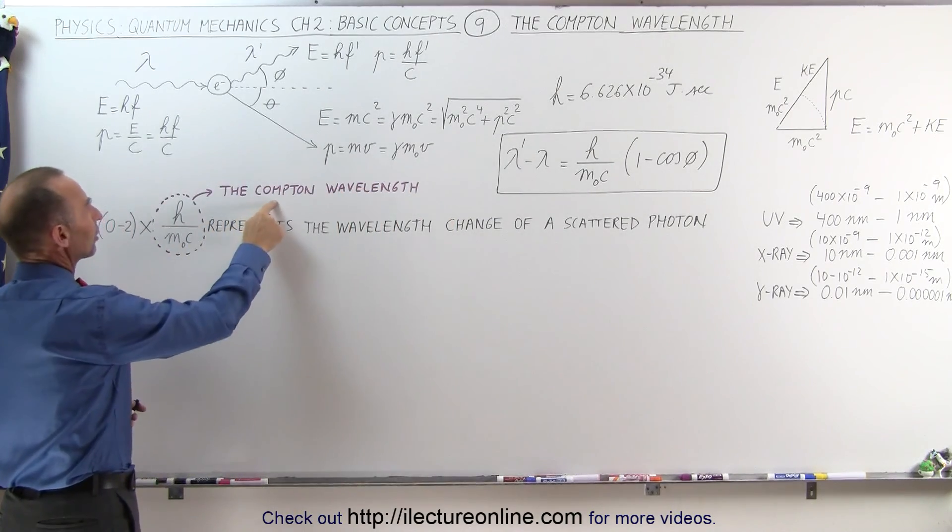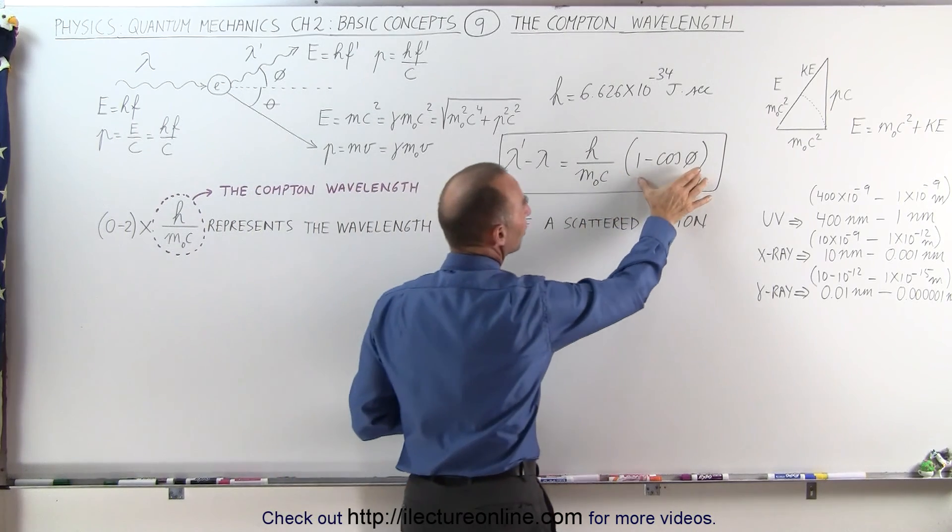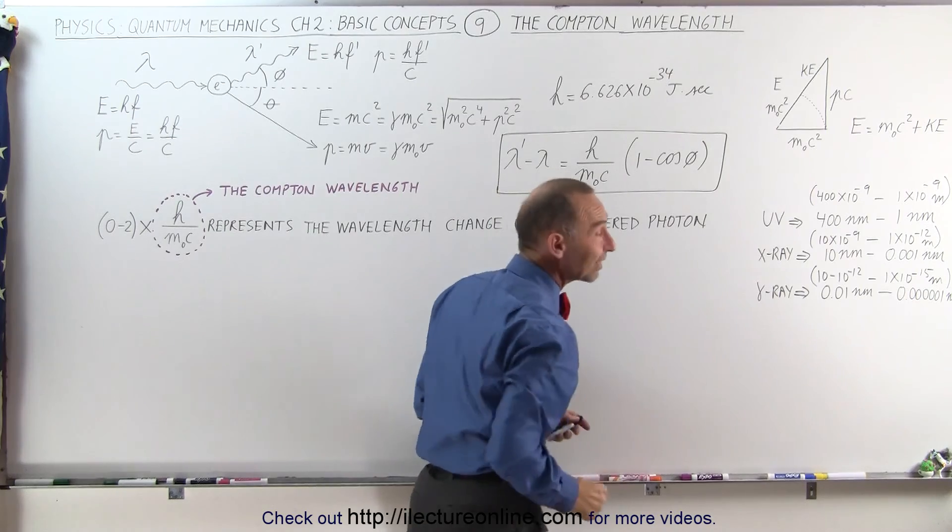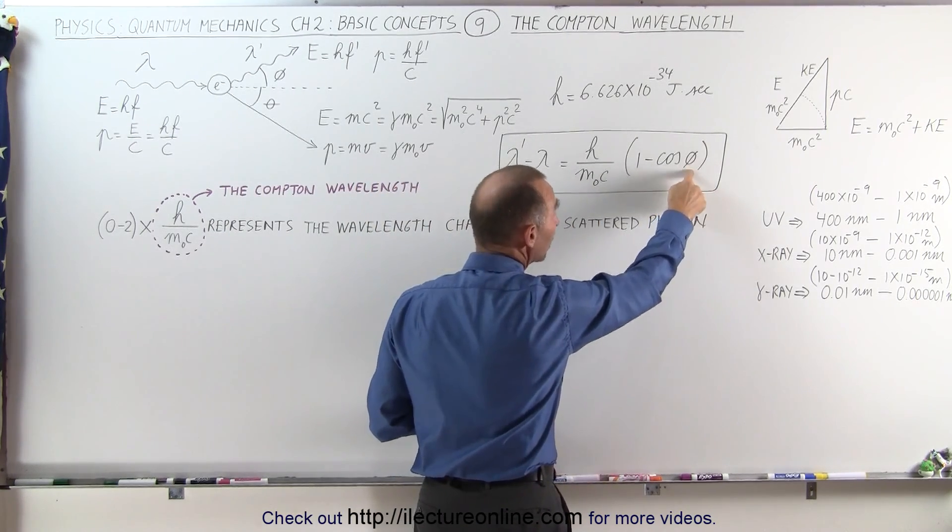Notice that this is what we call the Compton Wavelength, and realizing that what's in the parentheses here can take on a value from 0 to 2 depending upon the value of the scattering angle. For a scattering angle of 0 degrees,